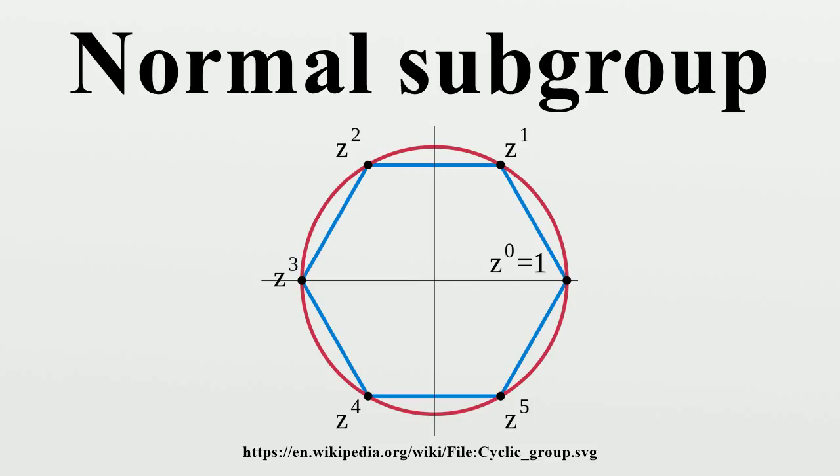We write for any subgroup, the following conditions are equivalent to normality. Therefore any one of them may be taken as the definition. For all g in G, gNg^-1 is a subset of N. For all g in G, gNg^-1 equals N.